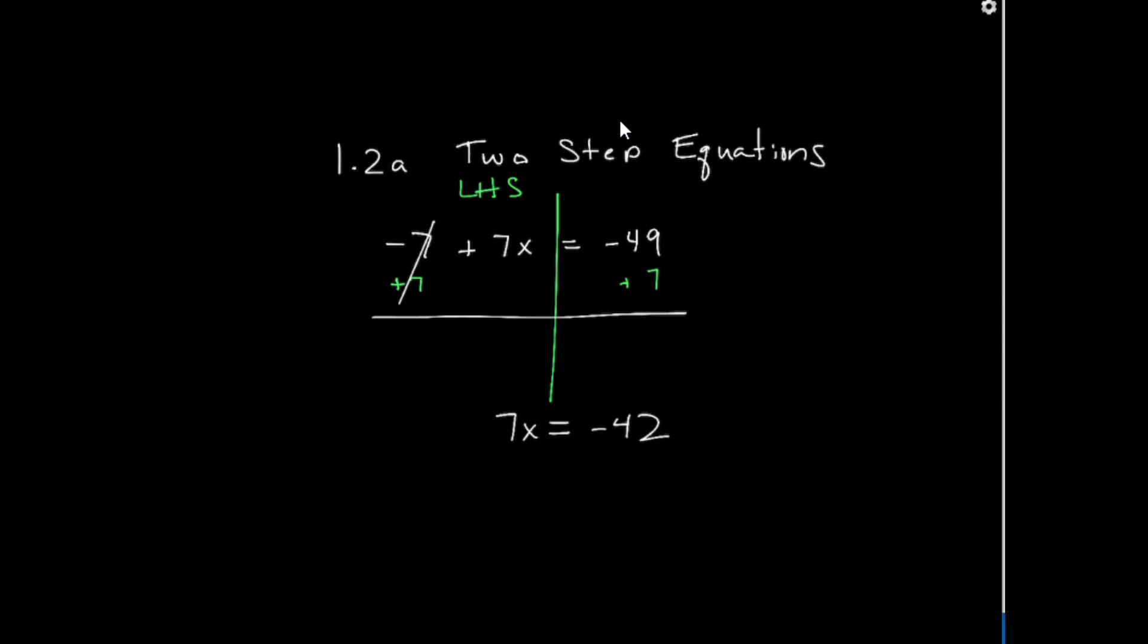Now we're down to the next step, and that is where I take whatever my coefficient, the number in front of x, which in this case is 7, and I divide both sides by 7. And my final answer is x is equal to negative 6.